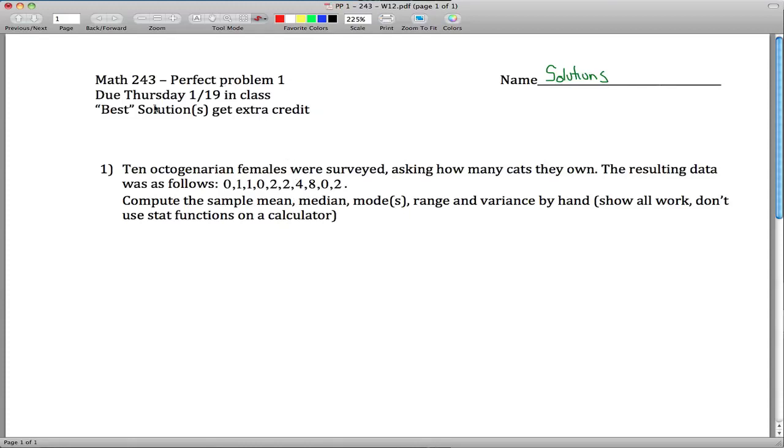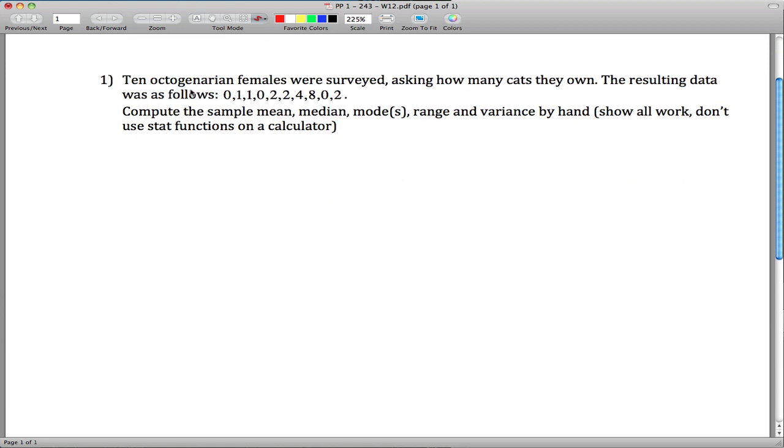Here are solutions to perfect problem 1 for math 243. All right, so we have 10 octogenarian females. That means 80, 80 year old-ish people in their 80s. We surveyed them to find out how many cats they own.